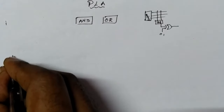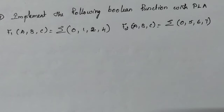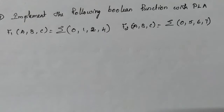We will go for an example. The question is: implement the following Boolean functions with PLA. The first one is F1(ABC) = summation of 0, 1, 2, 4 and F2(ABC) = summation of 0, 5, 6, and 7.